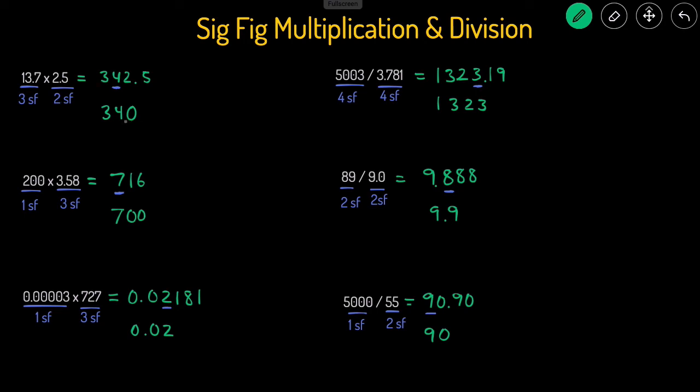But since we only want two sig figs in the final answer, we won't add that decimal point, making this last zero not count as a significant figure. And that's how you would do multiplication and division problems with significant figures taking into account.